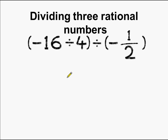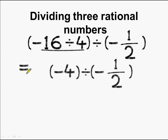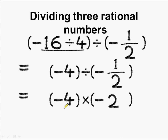Now let us see what happens in the case of division. Here we have minus 16 divided by 4 divided by minus 1/2. We first take the group of minus 16 divided by 4, which gives minus 4. Then we divide minus 4 by minus 1/2, which means multiplying by the reciprocal: minus 4 times minus 2 equals 8, since minus times minus is plus.